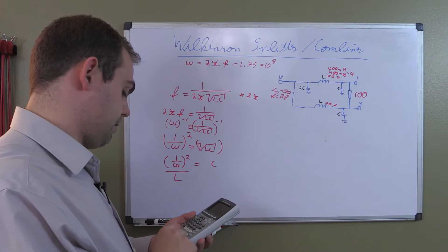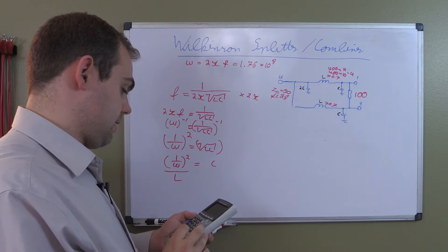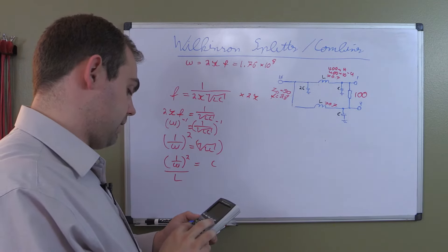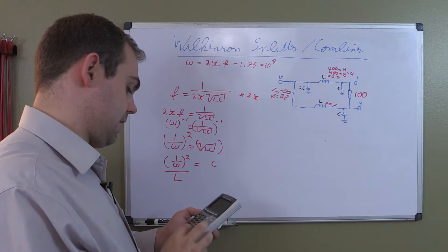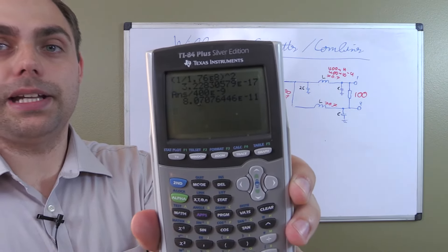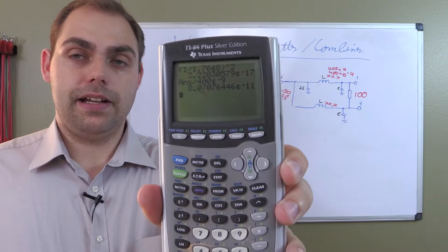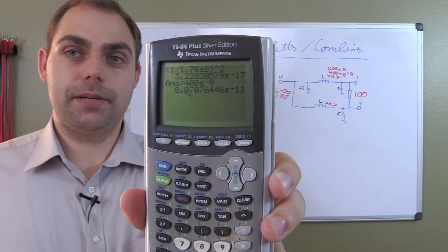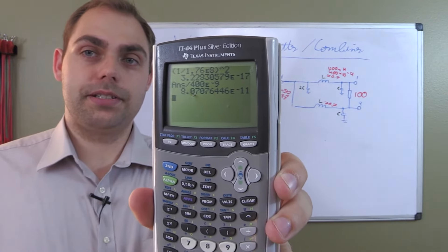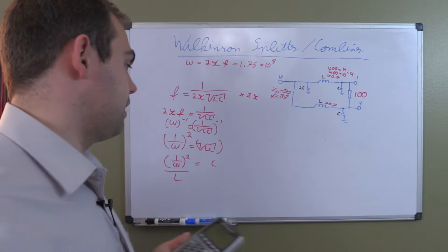1 over omega squared equals L times C. This is really easy. We just take L out and divide by L. So that gives us C. Having all the exponents ready and all the stuff pre-calculated makes our life super easy. So 1 divided by 1.76 exponent 8, the whole thing squared, and then divided by 400 exponent negative 9. Once again, the calculator gives the result in whatever makes sense by some simple rules of significant digits.